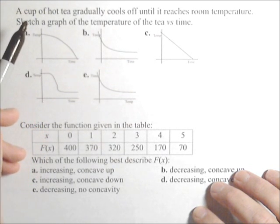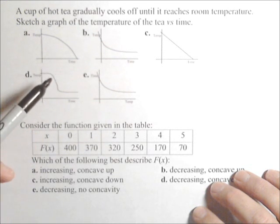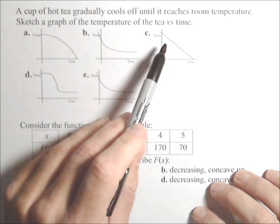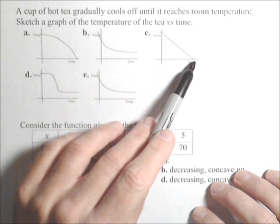What's gonna happen is the temperature's gonna cool off kind of quickly at first, but then the closer it gets to room temperature, the more gradual it gets. This would say that it's cooling off at a constant rate all the way down to zero.